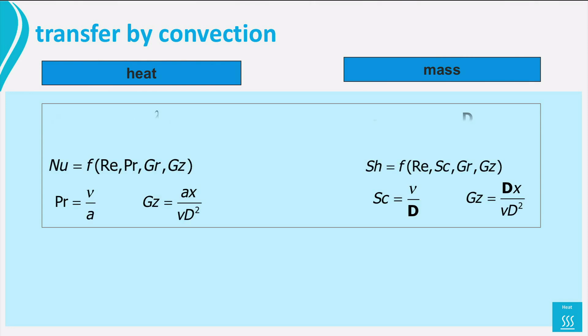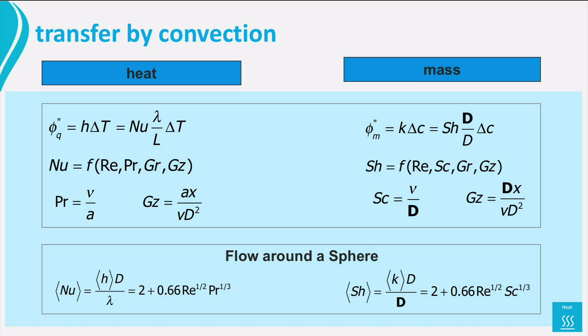We have already seen that in case of convection the similarity goes on. On this sheet you see that summarized. At the bottom we have an example, convective flow past a sphere. Again, the similarity is very strong and handy. All numerical coefficients are the same. Pause a minute or two at this sheet and let its message sink in.